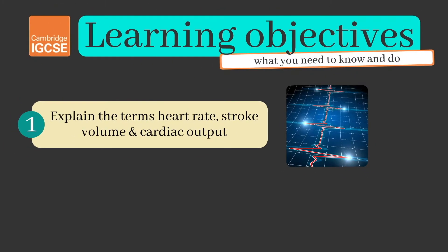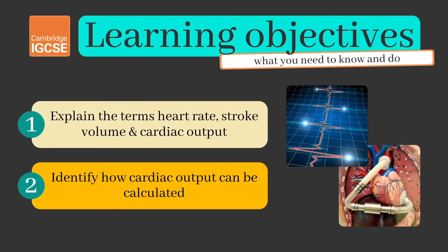There are just two learning objectives today: to explain the key terms heart rate, stroke volume, and cardiac output, and to identify how cardiac output can be calculated. We'll work our way through these now, but make sure you stick around to the end of the video as there'll be an opportunity for you to put what you've learned to the test.